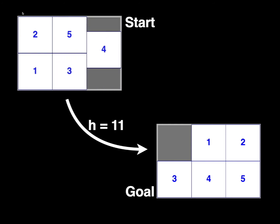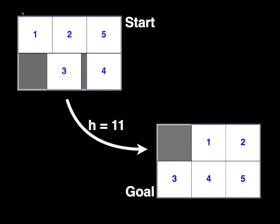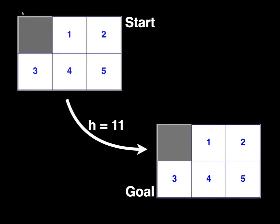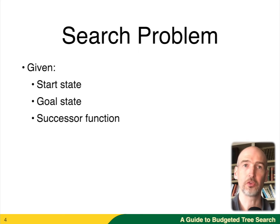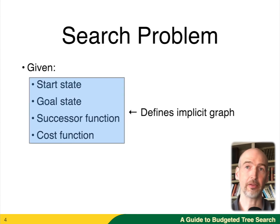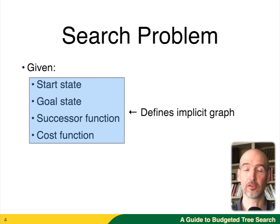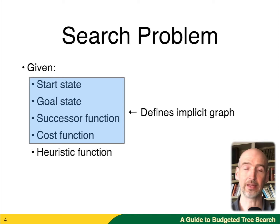By applying actions, we're going to try to find the optimal sequence of actions that takes us between the start and the goal. Generally speaking, a search problem is defined by a start state, a goal state, a successor function, and a cost function. These four things put together give us an implicit graph. Many problems will not fit in memory, therefore we'll need to use something like a depth first search, and we get that from this implicit graph. We also have a heuristic function which is estimating these costs.